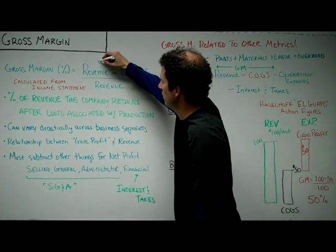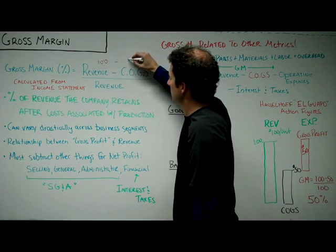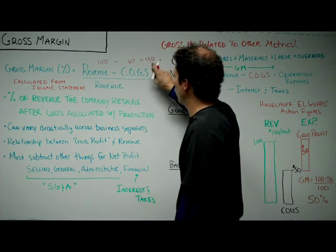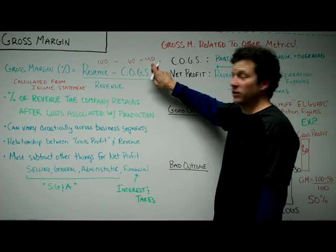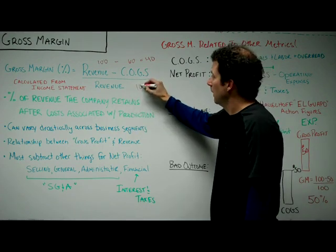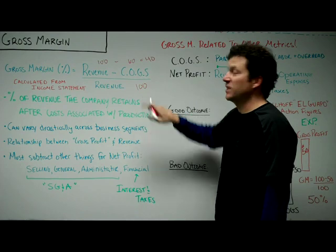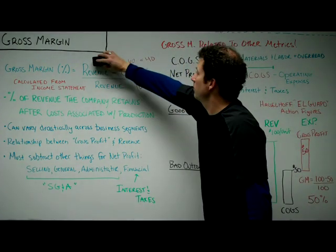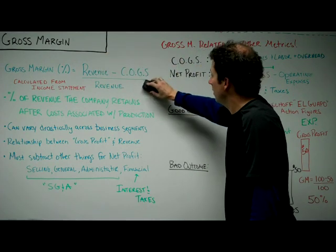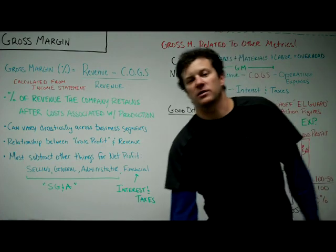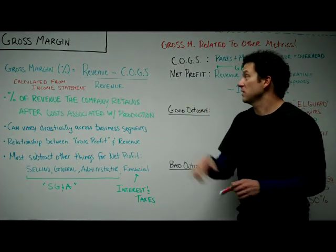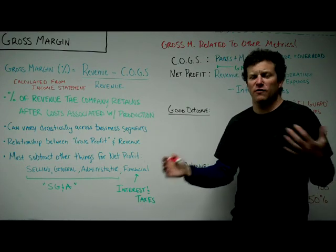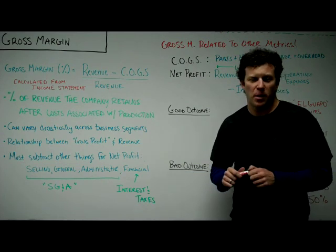Your gross margin would be 40 over 100, which is 40%. So $100 in revenue minus $60 to produce the product — that is a gross profit of $40. That word 'gross profit' refers to the dollars. And the gross margin is simply 40 divided by 100 as a percentage, so 40%. When I say my company has a gross margin of 40%, I'm saying that for every $100 of revenue I generate, I'm keeping $40 to fund the other pieces of my business that aren't included in cost of goods sold.